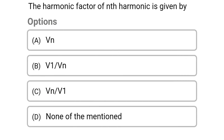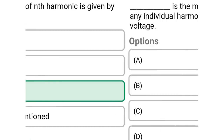Next question: the harmonic factor of the nth harmonic is given by — option A, VN; option B, V1 divided by VN; option C, VN divided by V1; option D, none of the above. The correct answer is option C, VN divided by V1.